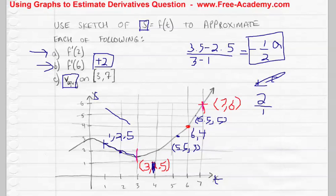Notice what it's saying by V average. S is our distance as a function of time. V is our velocity as a function of time. And velocity is the derivative of our distance. So what this is really saying is what is the derivative, the average derivative from 3 to 7.